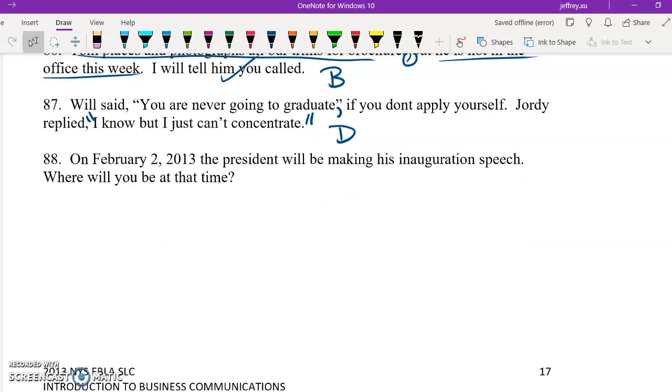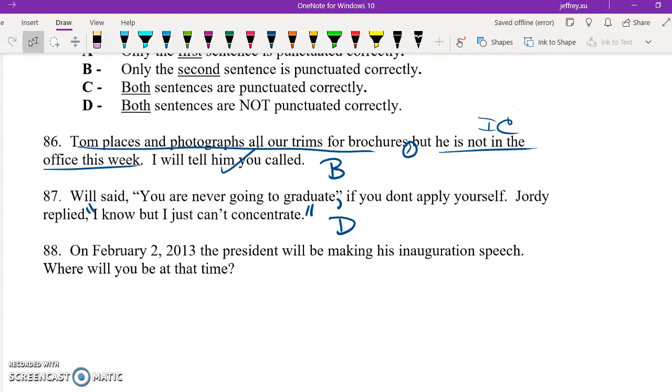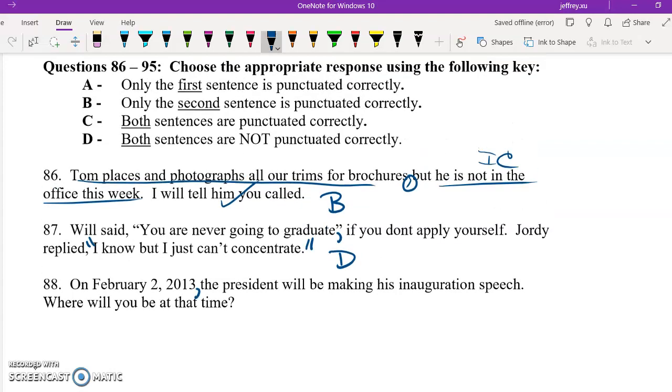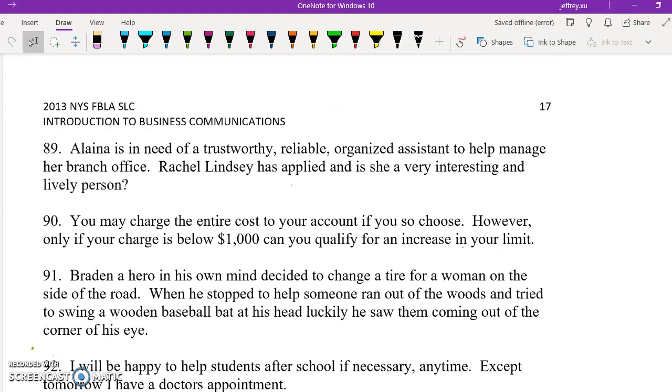88. On February 2nd, 2013, the president will be making his inauguration speech. Where will you be at the time? So you actually need a comma after the year when you're using a month, day, year format. The second sentence is correct. So B is the correct answer for this question. Elena is in need of a trustworthy, reliable, organized assistant to help manage her branch office. Rachel Lindsay has applied and she is a very interesting and lively person. So this should be a period and there should be a comma here. The first sentence is good. So the answer would be A. Only sentence one is correct.